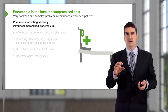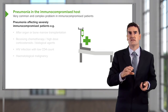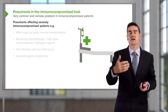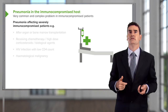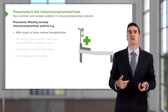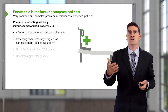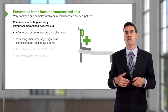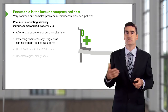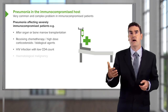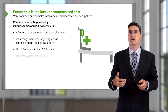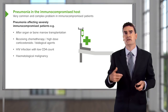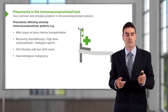The immunocompromised host is very much more complex than normal pneumonia because of the extended range of organisms that may be causing the problems. To reiterate, we're talking about patients with really quite marked immunosuppression: those who have had organ or bone marrow transplantation, received chemotherapy or high-dose cytotoxic or biological agents, those with HIV infection and a low CD4 count, or a haematological malignancy which affects white cells and causes greater immunosuppression.